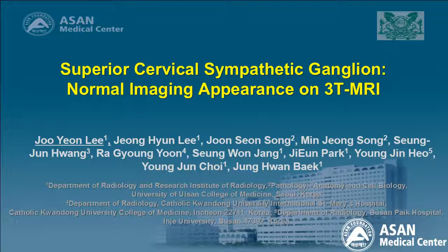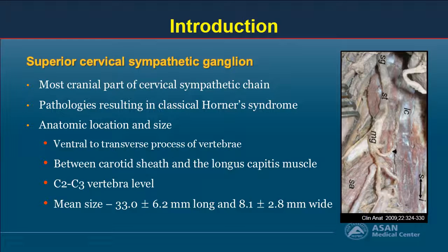Hello ladies and gentlemen. My topic is MR appearance of normal superior cervical sympathetic ganglion. The superior cervical sympathetic ganglion is the most cranial part of the cervical sympathetic chain. It serves as a neural circuit to distribute sympathetic fibers to the head and neck regions. Its pathologies result in Horner syndrome.